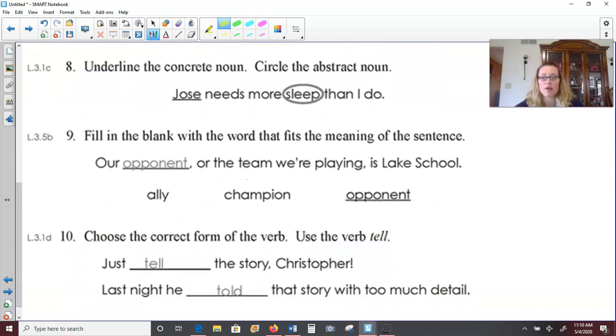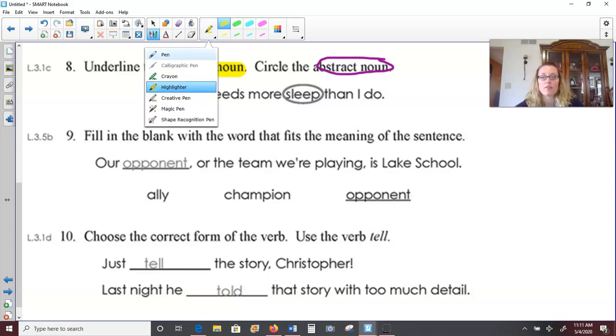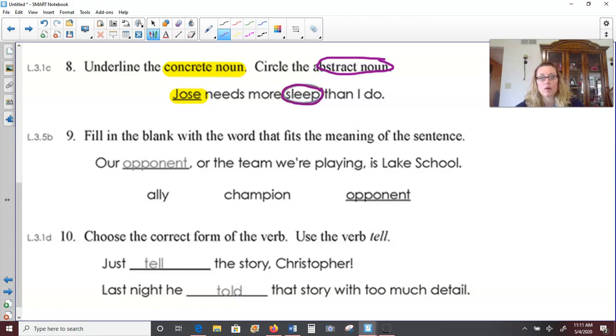Number eight, underline the concrete noun, and then it says to circle the abstract noun. Remember, concrete is something that we can physically see, feel, or touch. So Jose needs more sleep than I do. Remember, a noun is a person, place, or thing. So Jose is a noun. He's a person. And it's a person that we can see in existence. And then for the abstract noun, something we can't really physically see on its own would be sleep. We know sleep is a thing. It's something that we all need. But we can see what sleep looks like when an animal or a person is doing it. But we just can't look at sleep on its own. So that would be the abstract noun.